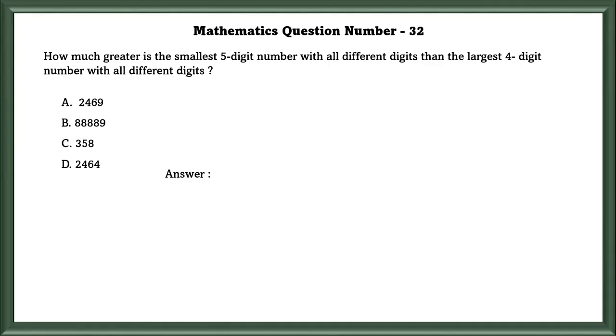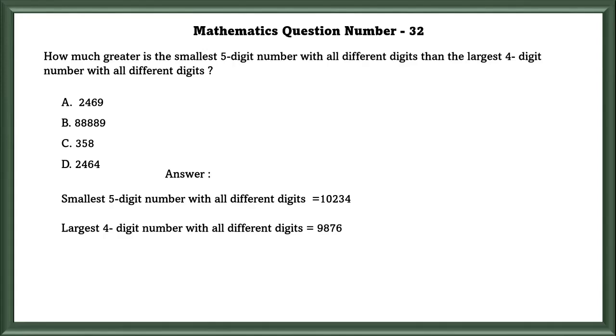Mathematics question number 32. How much greater is the smallest 5-digit number with all different digits than the largest 4-digit number with all different digits? The smallest 5-digit number with all different digits is 10,234, and the largest 4-digit number with all different digits is 9,876. The smallest 5-digit number is 358 greater than the largest 4-digit number.